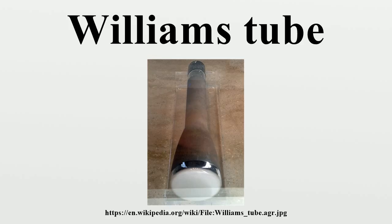Working Principle: The Williams Tube depends on an effect called secondary emission. When a dot is drawn on a cathode ray tube by a beam of fast-moving electrons, the area of the dot becomes slightly positively charged and the area immediately around it becomes slightly negatively charged, creating a charge well. The charge well remains on the surface of the tube for a fraction of a second, allowing the device to act as a computer memory. The lifetime of the charge well depends on the electrical resistance of the inside of the tube.